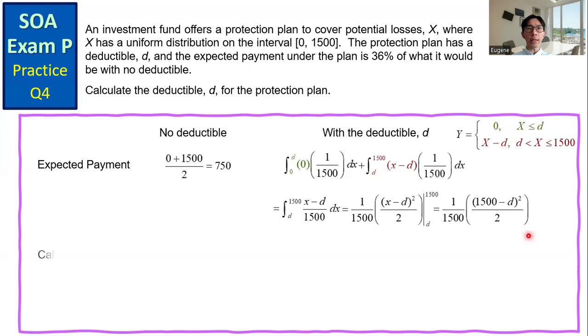From that, we can calculate the deductible D. The expected payment with the deductible is 36% of what it would be with no deductible.